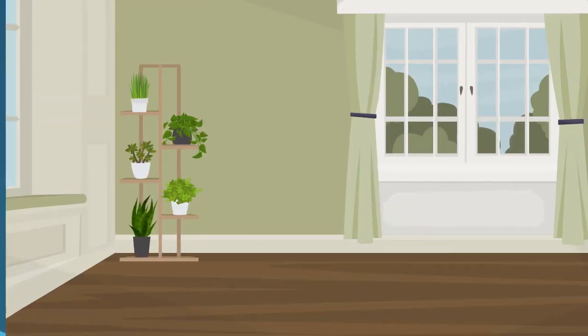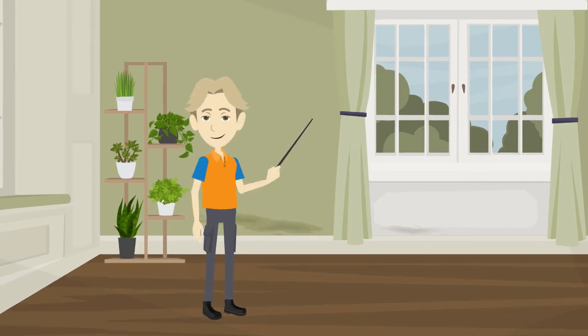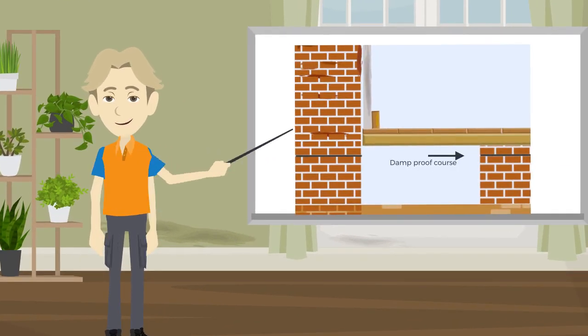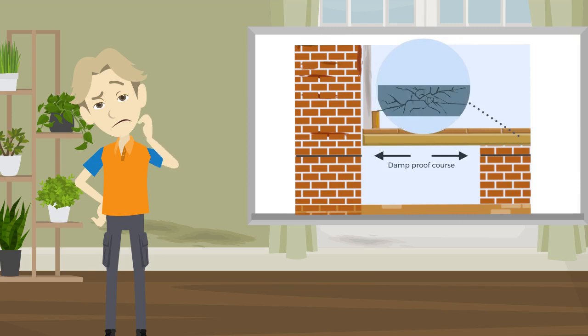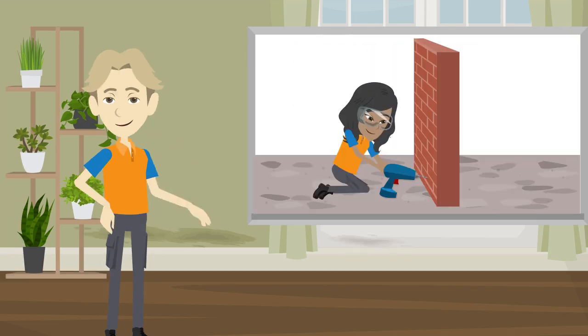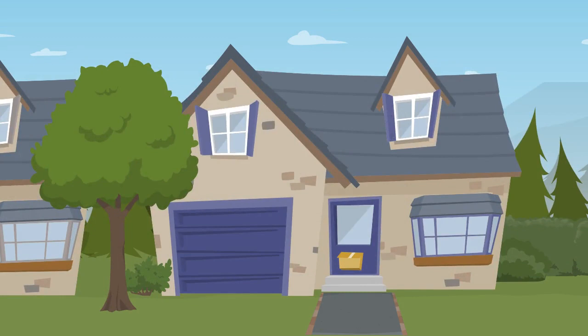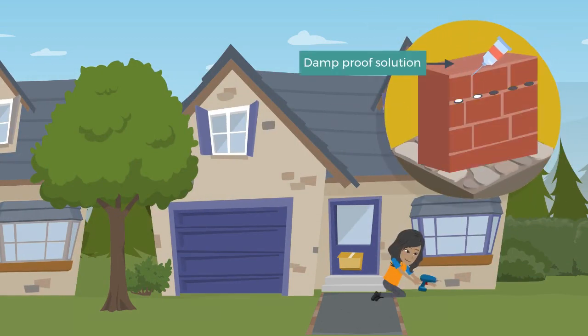Given that rising damp problems are only found when a damp proof course either isn't present or has become cracked or deteriorated over time, the most common solution is to install a remedial damp proof course using the injection method. Our specialists supply a damp proof solution directly into the mortar bed near the base of the wall.